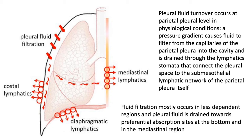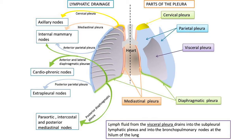In the upper and middle lobe regions there are high amounts of parietal fluid filtration, whereas at the intersection between the lower and middle lobe you have high amounts of absorption through the costal lymphatics. There is also very high fluid reabsorption in the diaphragmatic and mediastinal lymphatics. Overall, pleural fluid moves from the superior thoracic cavity and is reabsorbed inferiorly, medially, and laterally — most importantly at the diaphragmatic area. Lymph fluid from the visceral pleura drains into the subpleural lymphatic plexus and into the bronchopulmonary nodes at the hilum of the lung.